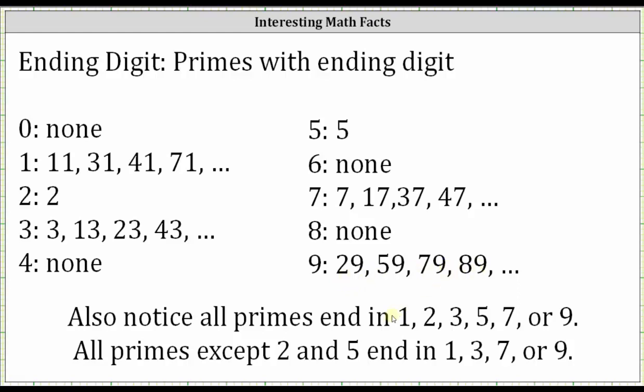So notice that all primes end in one, two, three, five, seven, or nine. All primes except two and five end in one, three, seven, or nine.